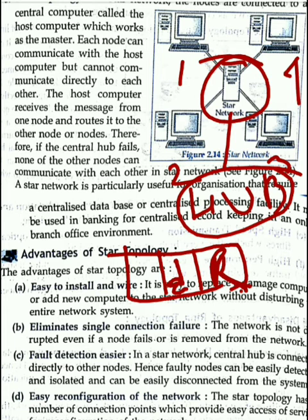The hub has two types: one is the normal hub and one is the intelligent hub. The intelligent hub is called the repeater. If you want to send data from node 1 to node 3, the repeater can detect who has the data address and will send it only to that specific node.